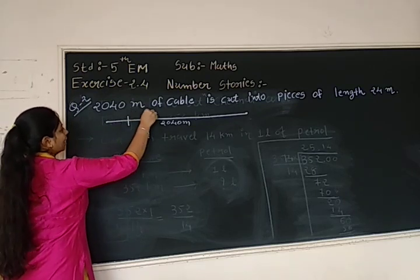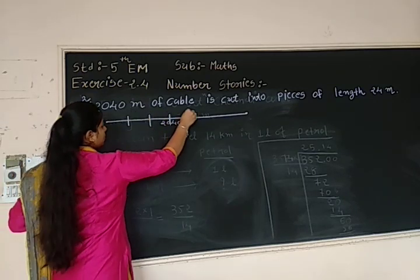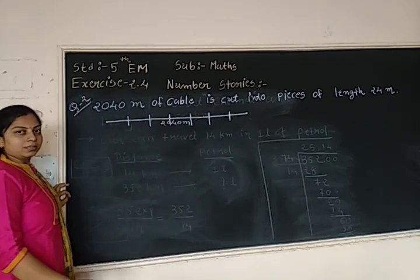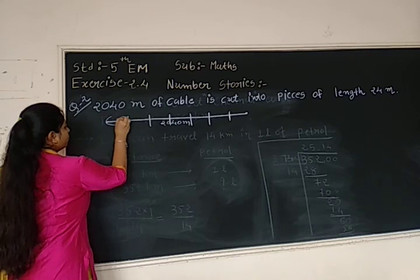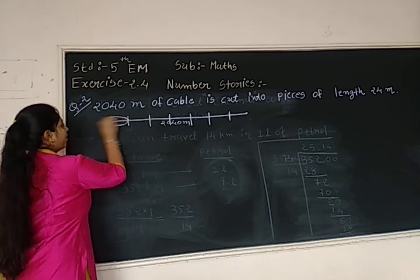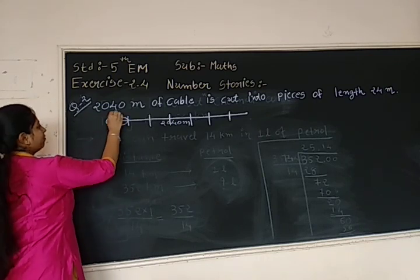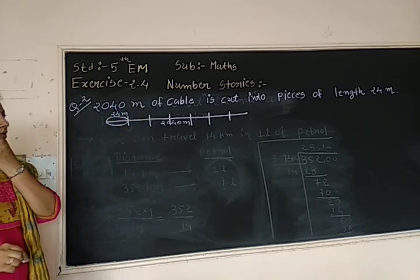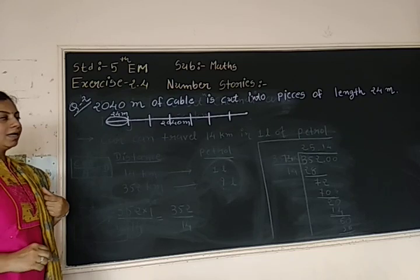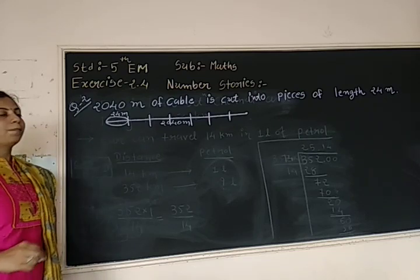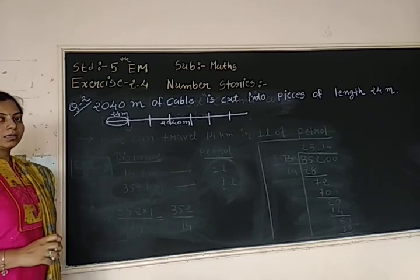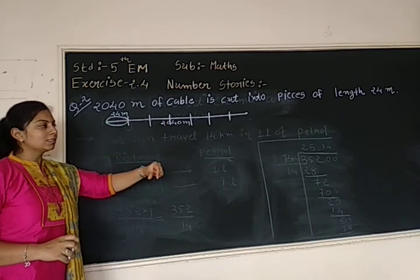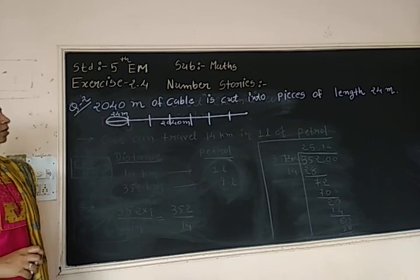Suppose I am writing like this. See, this way a cable is cut. So length of one part is 24 meters. That is given in the question. Clear? And what we have to find? How many such parts we will get? That is our question. So to count the number of parts what we will do? Division.